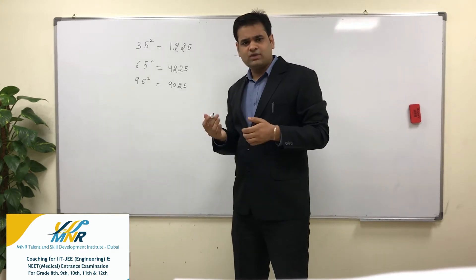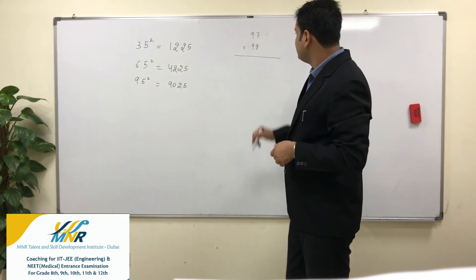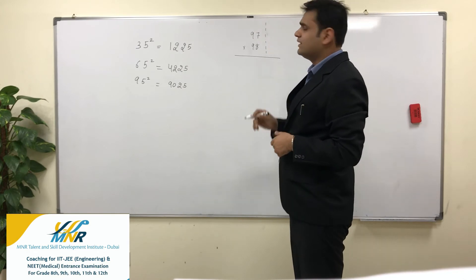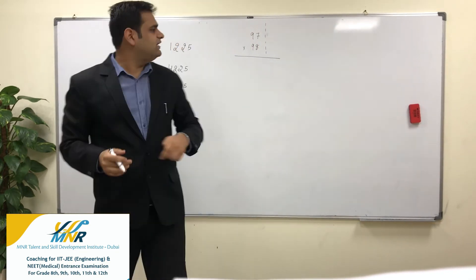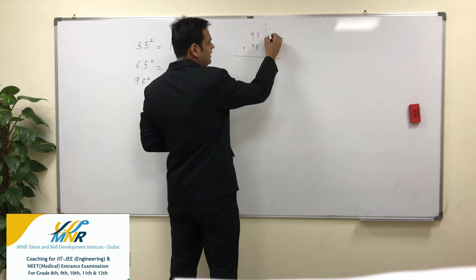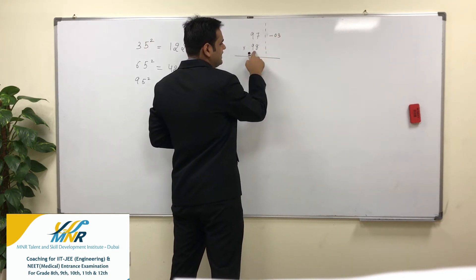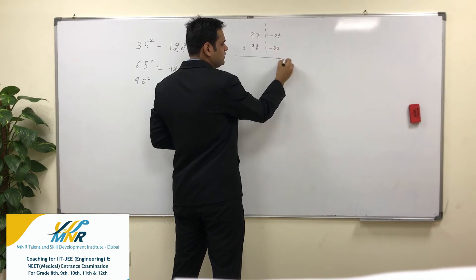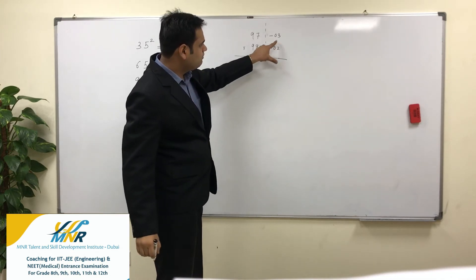See, these numbers are close to 100. Just take the difference of this number from 100. So 97 minus 100 will give me minus 3. 98 minus 100 will give you minus 2. Now multiply these two numbers. Minus 3 into minus 2 will give you 6.